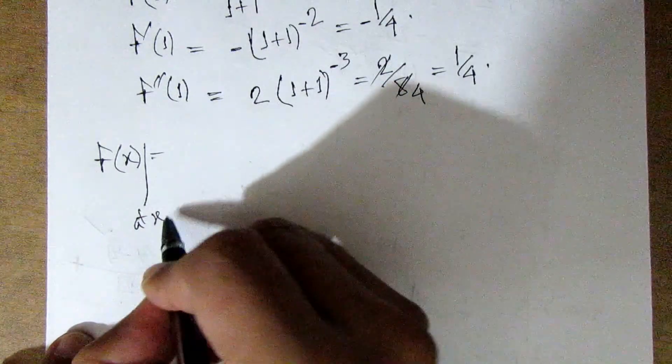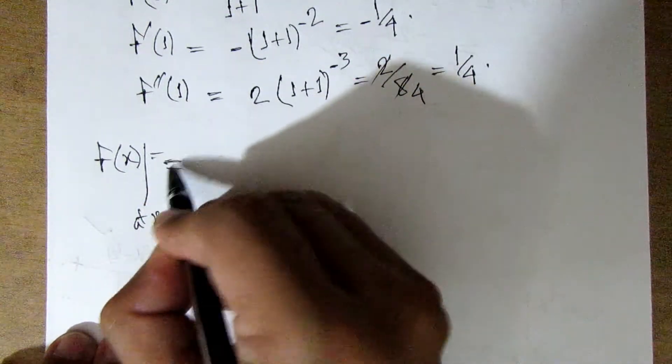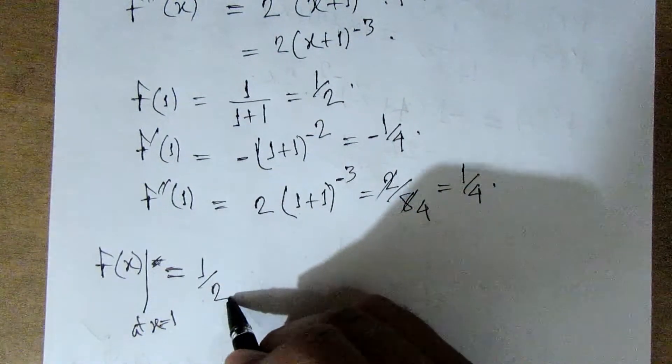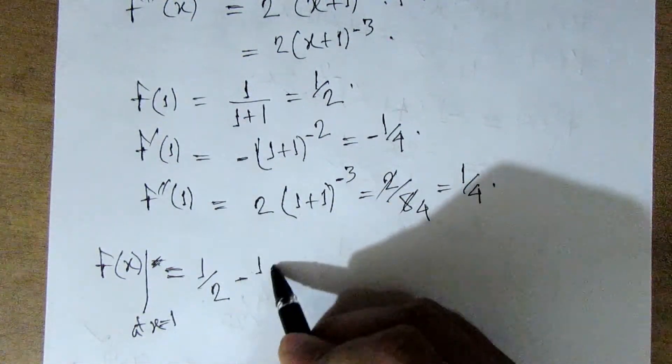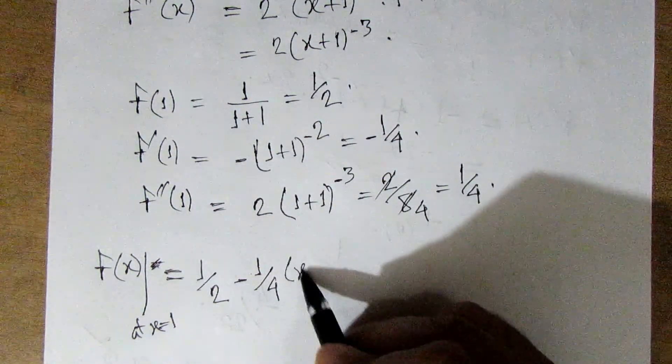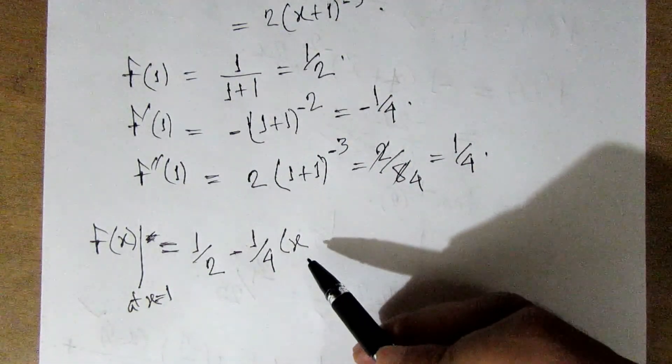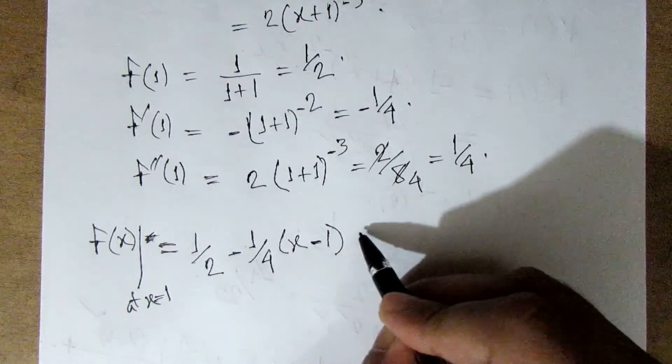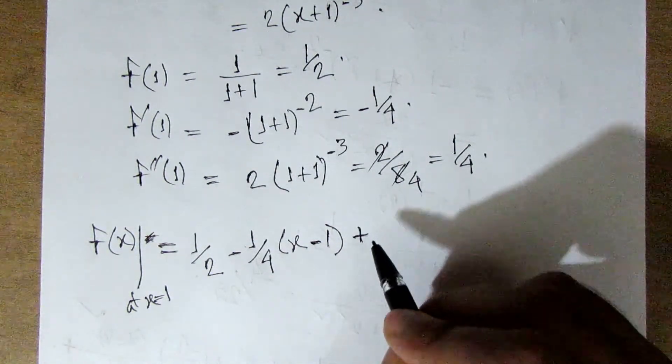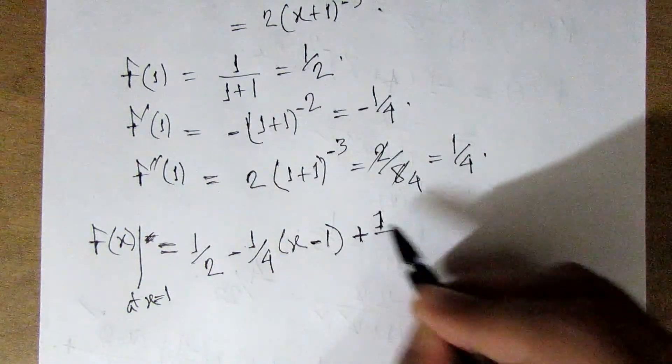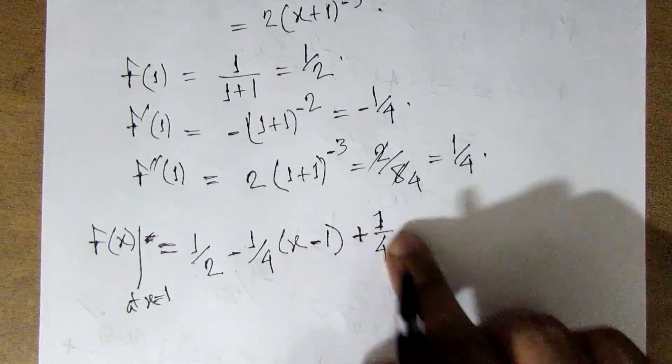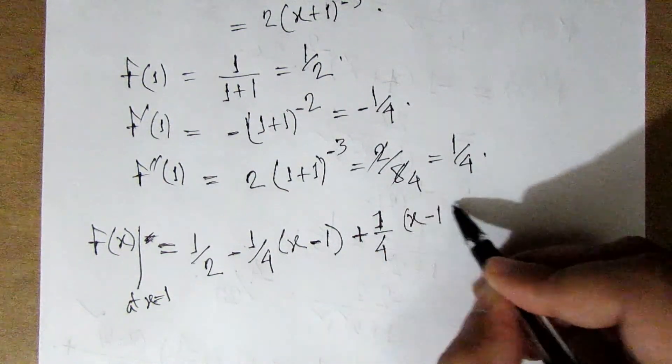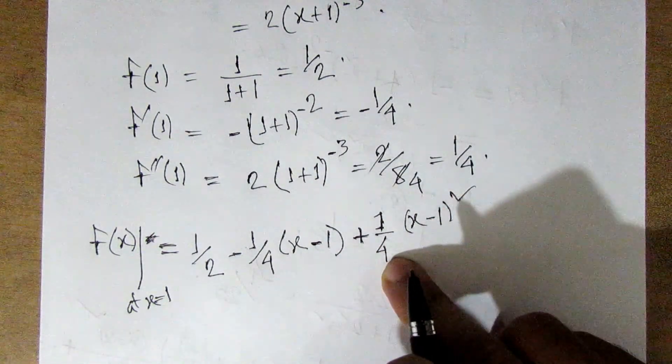At this point, we write out the Taylor series expansion: 1 by 2 minus 1 by 4 times x minus 1, plus 1 by 4 times x minus 1 squared, the double derivative function.